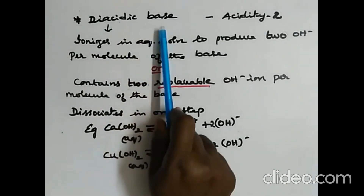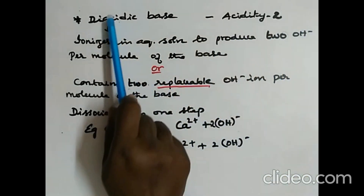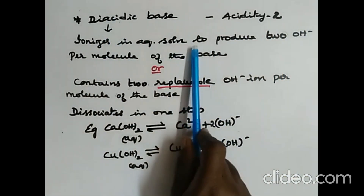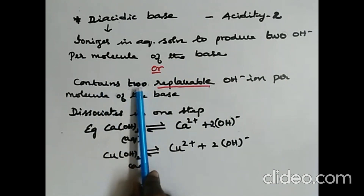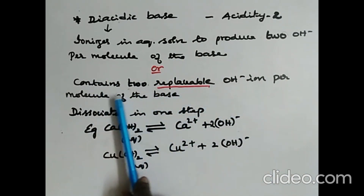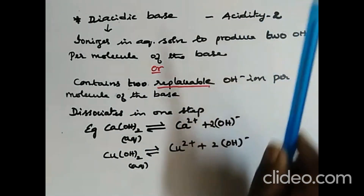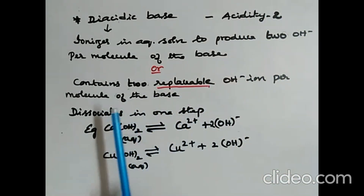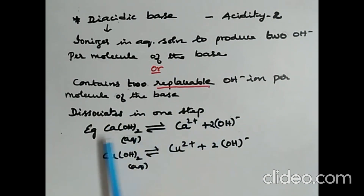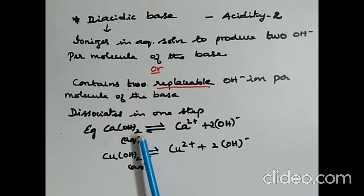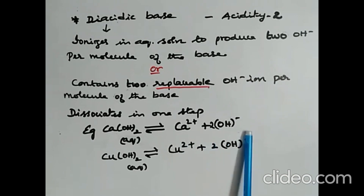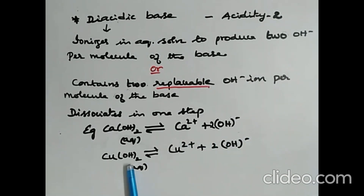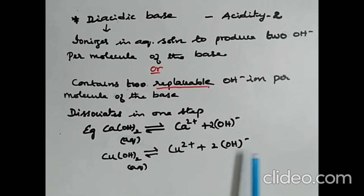Diacidic base: acidity is 2 — it ionizes in aqueous solution to produce 2 hydroxyl ions per molecule, or contains 2 replaceable hydroxyl ions per molecule. It also dissociates in 1 step. Example: calcium hydroxide dissociates to produce Ca2+ and 2 OH− ions. Another example is copper 2 hydroxide, which dissociates to produce Cu2+ and 2 OH− ions.